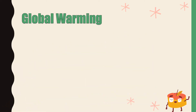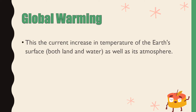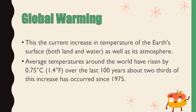Earth has experienced climate change in the past without help from humanity. But the current climatic warming is occurring much more rapidly than past warming events. Global warming is the current increase in the temperature of the Earth's surface, both land and water, as well as its atmosphere. The average temperatures around the world have risen by 0.75 degrees Celsius or 1.4 degrees Fahrenheit over the last 100 years. About two-thirds of this increase has occurred since 1975.